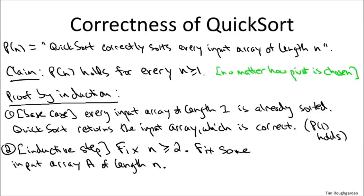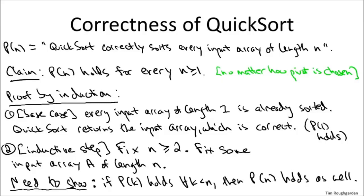Assuming that P(k) holds for all smaller values, all smaller integers, then P(n) holds as well. And remember, this is the inductive hypothesis. So in the context of QuickSort, we're assuming that QuickSort never makes a mistake on any input array that has length strictly smaller than n, and now we just have to show it never makes a mistake on input arrays that have size exactly n.